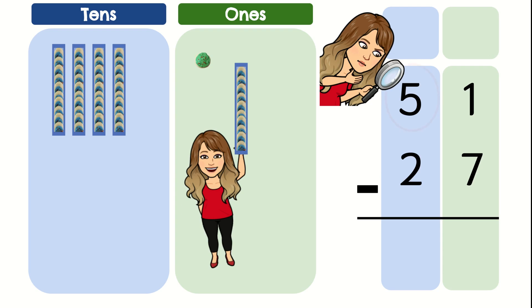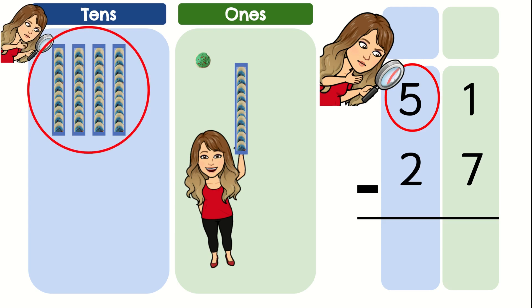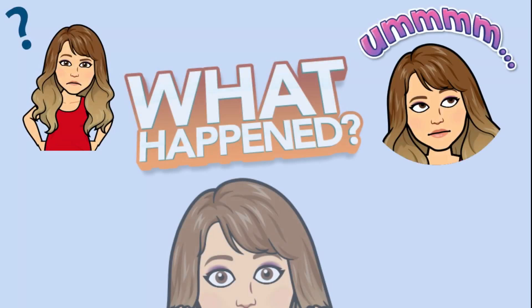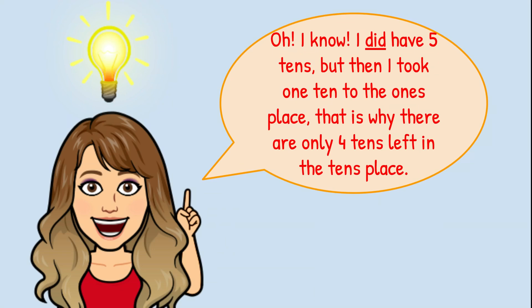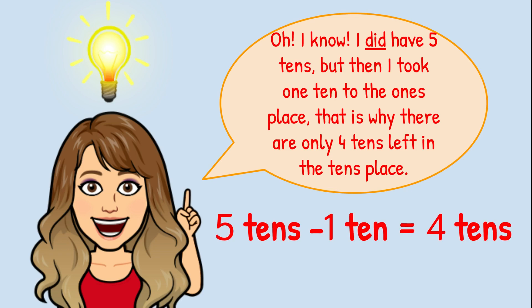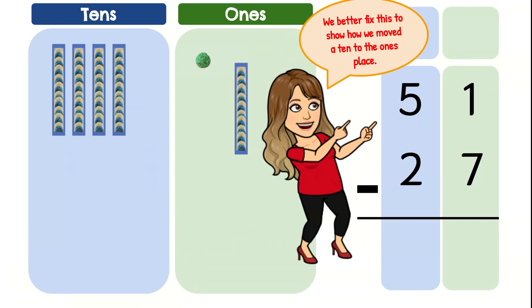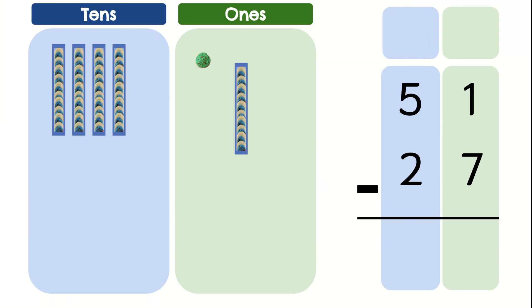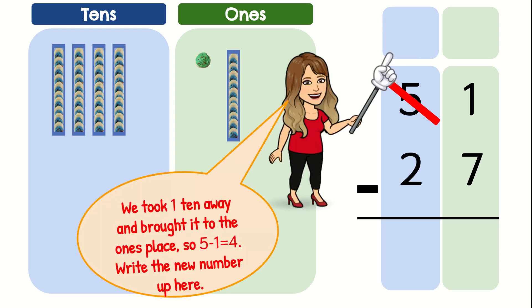Let's look at this problem now. Here it says I have five 10s, and here it shows I only have four 10s. I did have five 10s, but then I took one 10 to the ones place, and that's why there are only four 10s left in the 10s place. Five 10s minus one 10 equals four 10s. We're going to cross out the five and write a four above, because we took one 10 away and brought it to the ones place. So five minus one is four — we write the new number up on top.